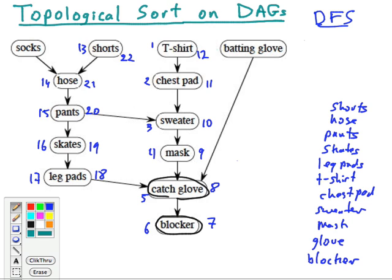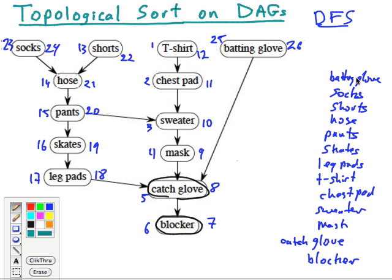We check the next node: 23, 24, and 25, 26 — because that's already visited. This is consistent with the dependency relationships. If we put on the batting glove first — kind of Michael Jackson style — then socks, shorts, hose, pants, skates, leg pads. We finished up the bottom part, and then t-shirt, chest pad, sweater, and then mask, catch glove, and blocker. That's how it works.